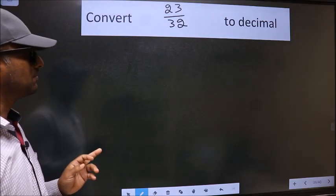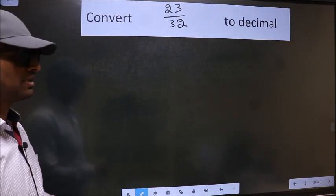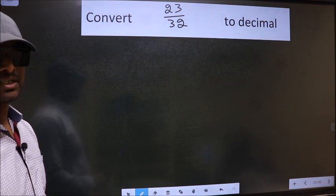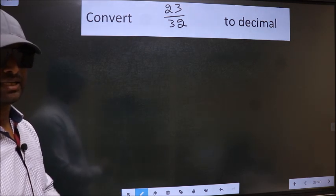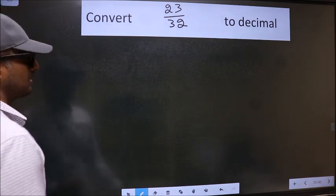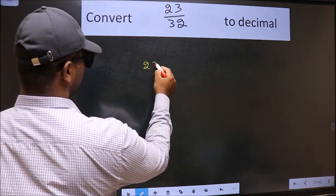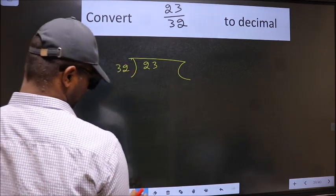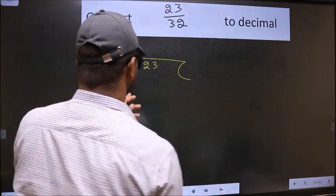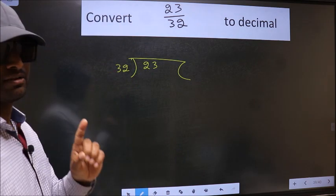Convert 23 by 32 to decimal. To convert to decimal we have to divide, and to divide we should frame it in this way: 23 here and 32 here. This is your step 1.